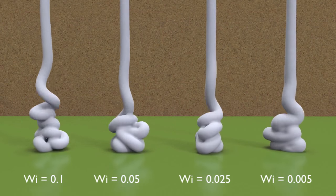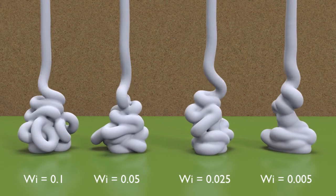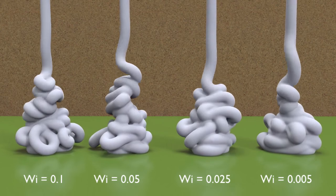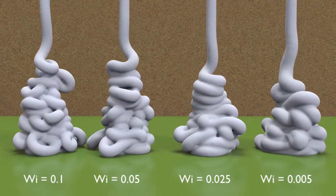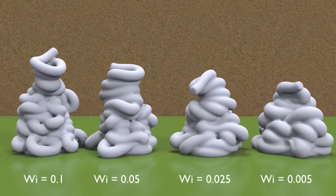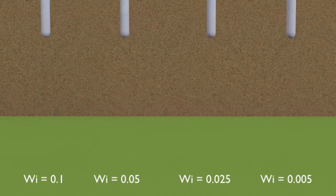We demonstrate the effect of the Weisenberg number on the simulation of foams. A smaller Weisenberg number corresponds to more plastic behavior. Conversely, a larger Weisenberg number corresponds to more elastic behavior.